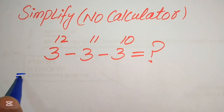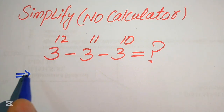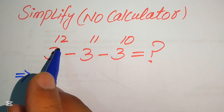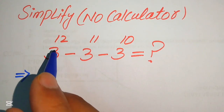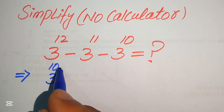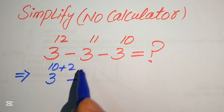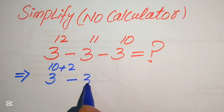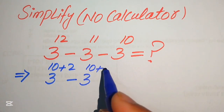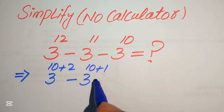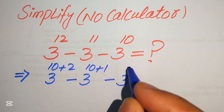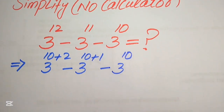The very first step is to focus on the exponents of each term. The exponent of the first term is 12 — we will break it as 10 plus 2. Then we have minus 3 to the power of 11, written as 3 to the power of 10 plus 1, minus 3 to the power of 10.